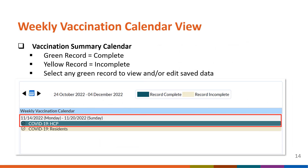After successfully submitting your COVID-19 summary data into the reporting application, you can return to the Vaccination Summary Data page. The COVID-19 vaccination HCP record will now be highlighted green. Records highlighted in green represent complete COVID-19 vaccination data saved into NHSN, while records indicated in yellow indicate missing or incomplete COVID-19 vaccination data. Facilities can select any green record on the vaccination summary calendar to review and/or edit their saved data.